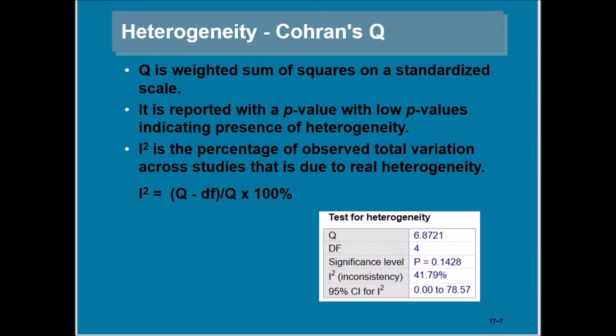Here is a sample test of heterogeneity. Q is 6.8721, degrees of freedom equals 4, significance level p equals 0.1428. I-square, which is a measure of inconsistency or heterogeneity, is 41.79%, and the confidence interval for I-square is from 0 to 78.57%.